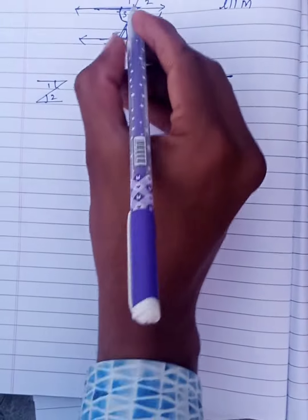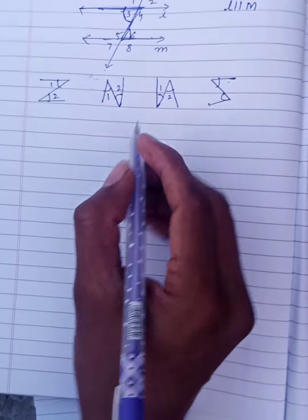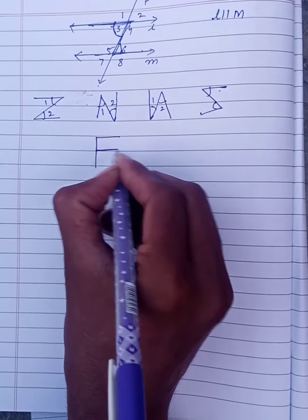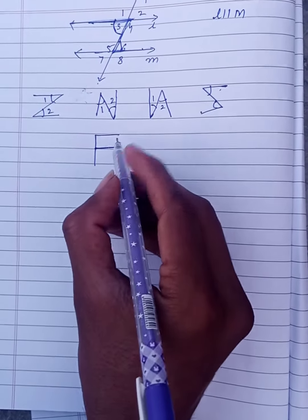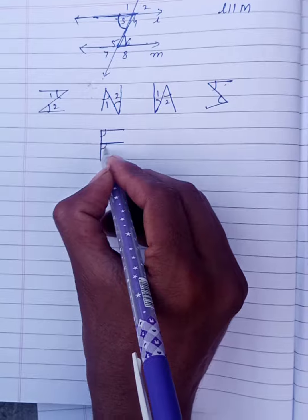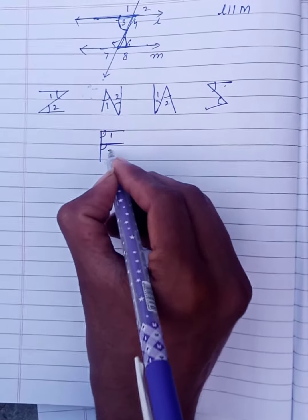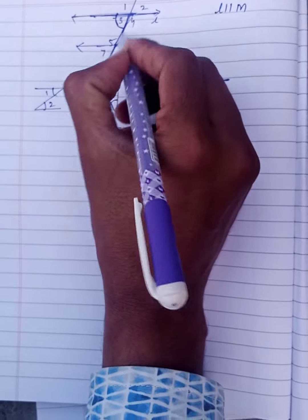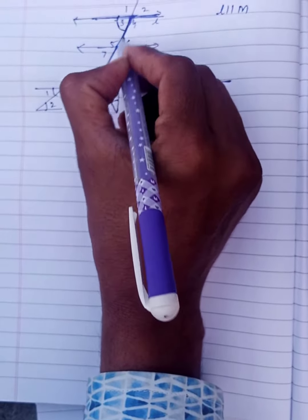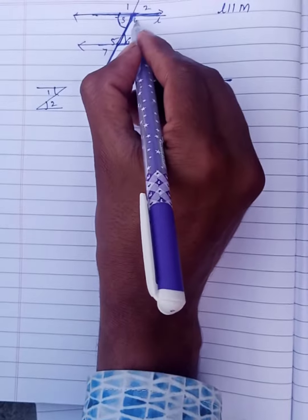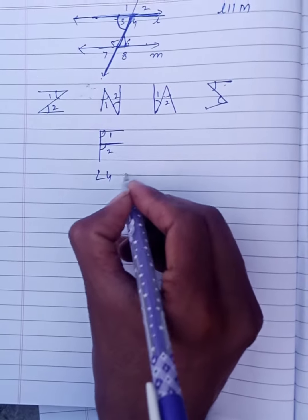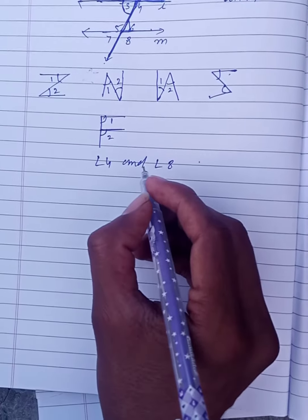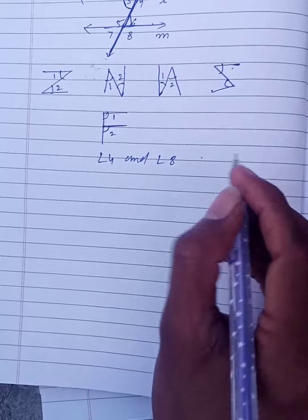Next, we can find another one — the corresponding angles. Wherever the F sign forms on two parallel lines, if the F is formed, those angles are equal. In this diagram, you can see that angle 4 and angle 8 are the corresponding angles. Corresponding angles and alternate interior angles are equal. Thank you.